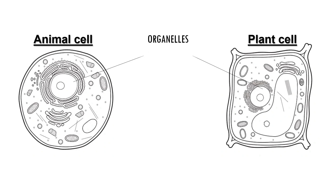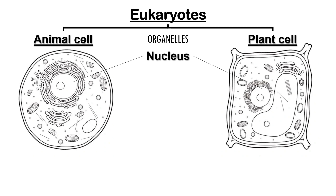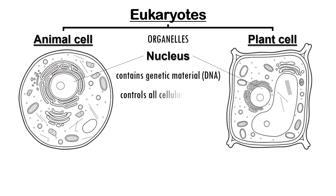Both cell types also contain a nucleus — they are eukaryotes. The nucleus holds the cell's genetic material, DNA, and controls all the cell's activities. You can think of it as the control center of the cell.